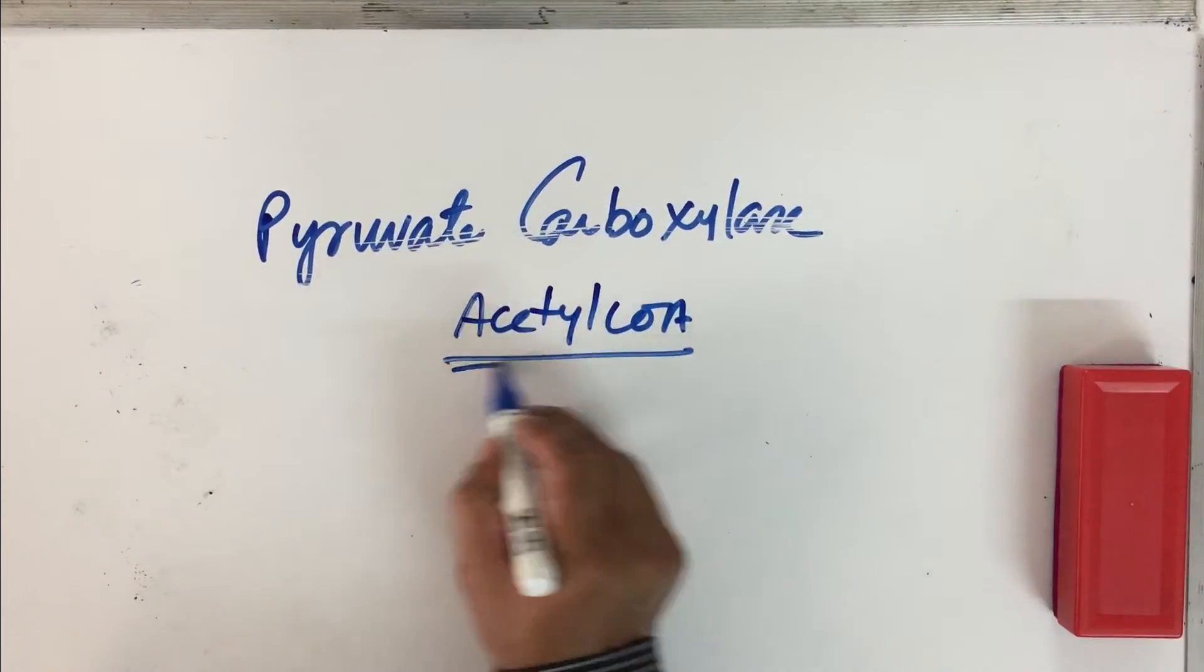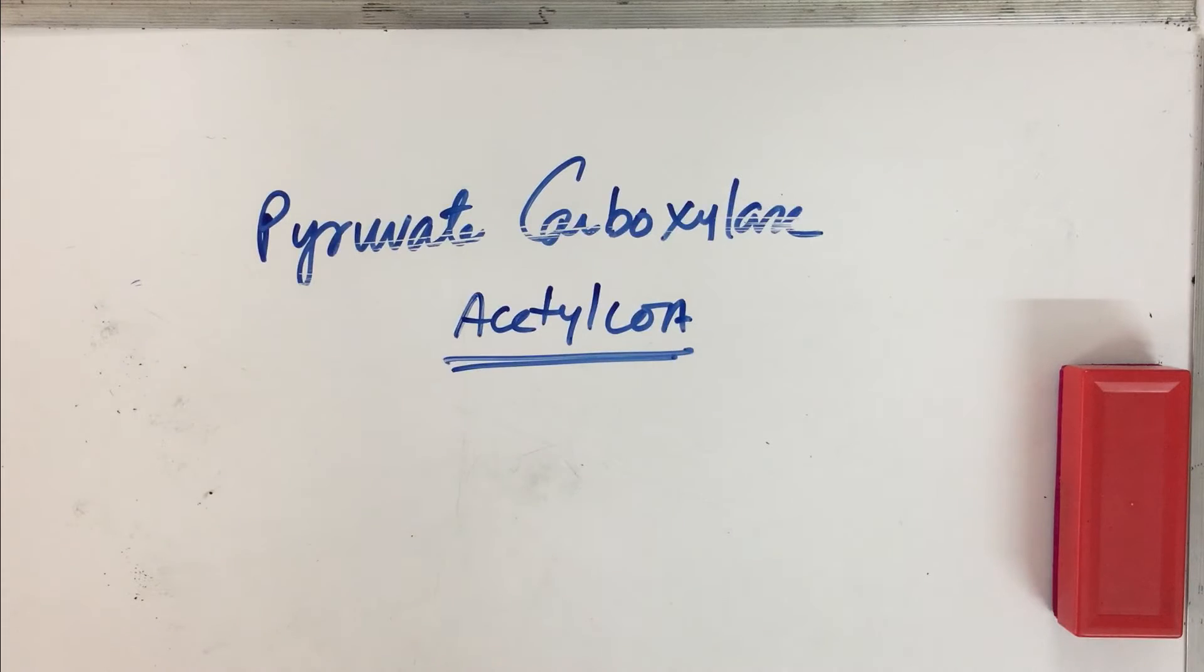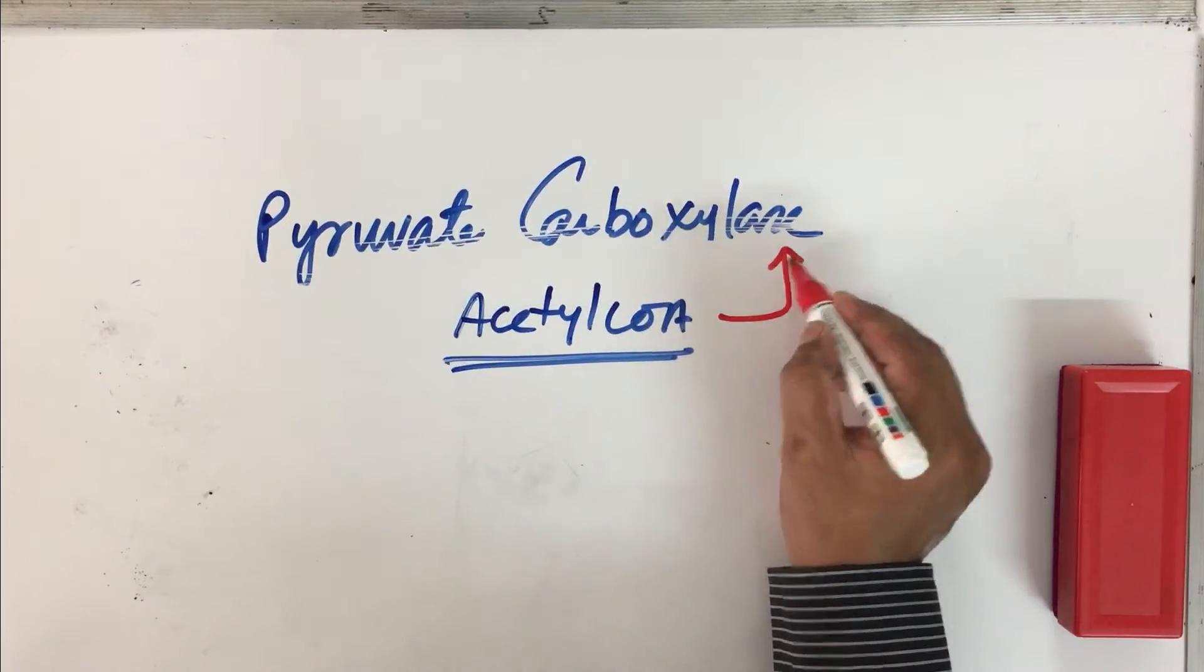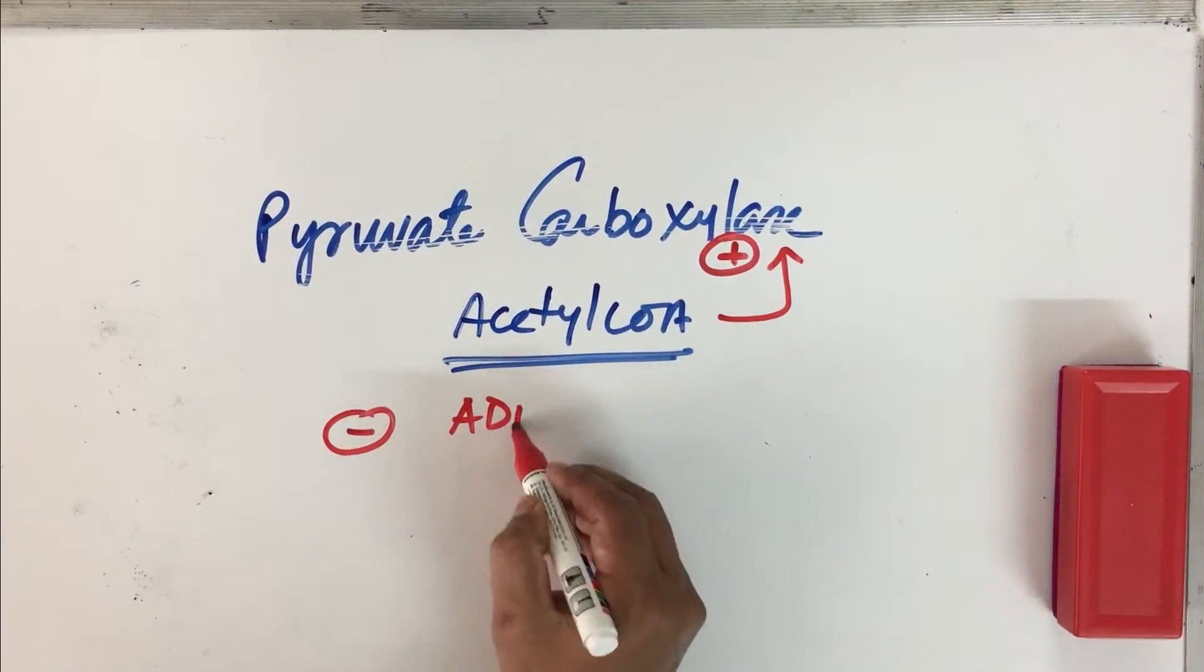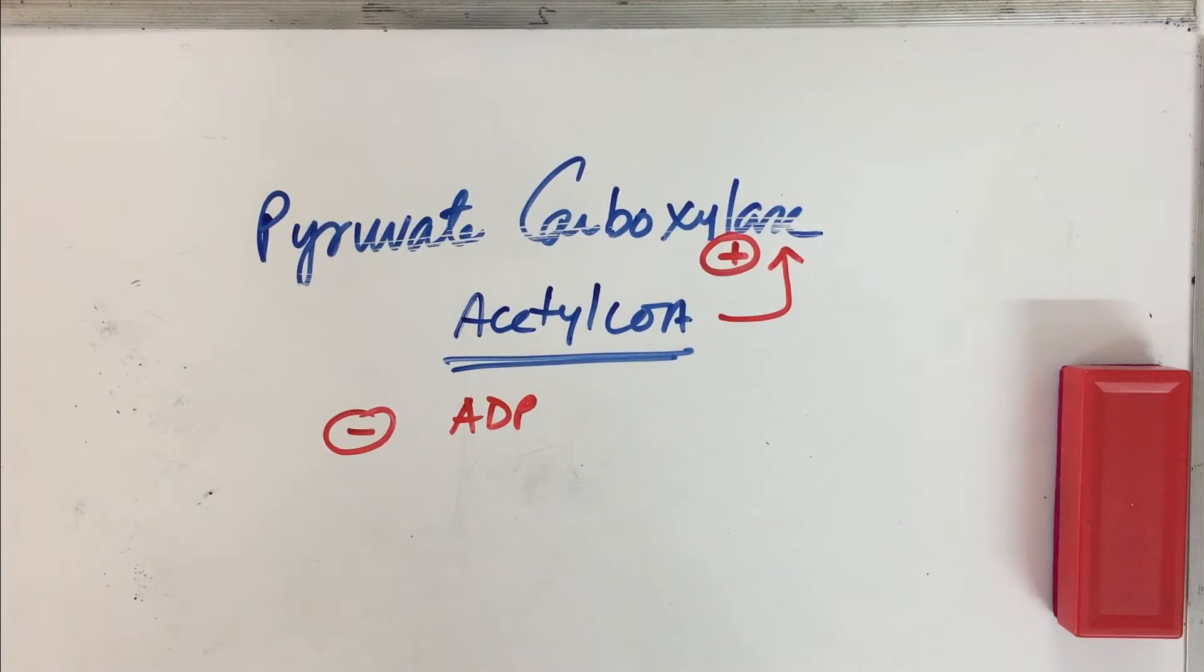Now the most important allosteric molecule of pyruvate carboxylase is acetyl-CoA. There is a dispute at the moment, because there has been some studies showing that even when acetyl-CoA levels are less in a cell, it is still able to carry out the reaction. But to the best of our knowledge, acetyl-CoA becomes the most important allosteric activator of this pyruvate carboxylase enzyme. Unless acetyl-CoA is bound to this pyruvate carboxylase, this enzyme is not active. So this is an important aspect about pyruvate carboxylase enzyme. An inhibitor of this pyruvate carboxylase is ADP.